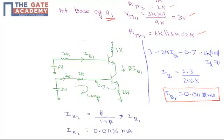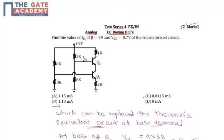Now we find IB2. The formula is IB2 = β/(1+β) × IB1. Substituting the values for IB1 and β from the question, we get IB2 = 0.01126 milliamps, which is nearly equal to option C having 0.0115 milliamps. So option C is the correct answer. Thank you.